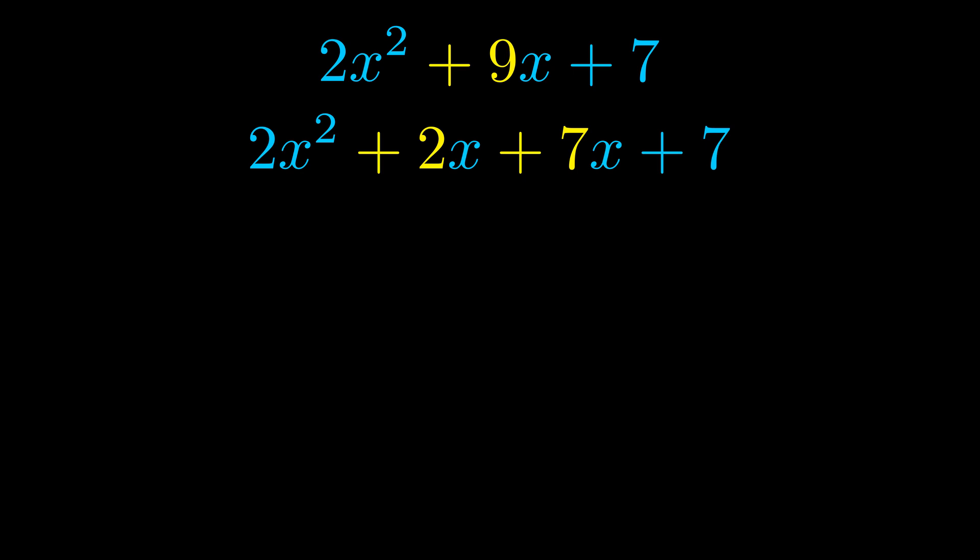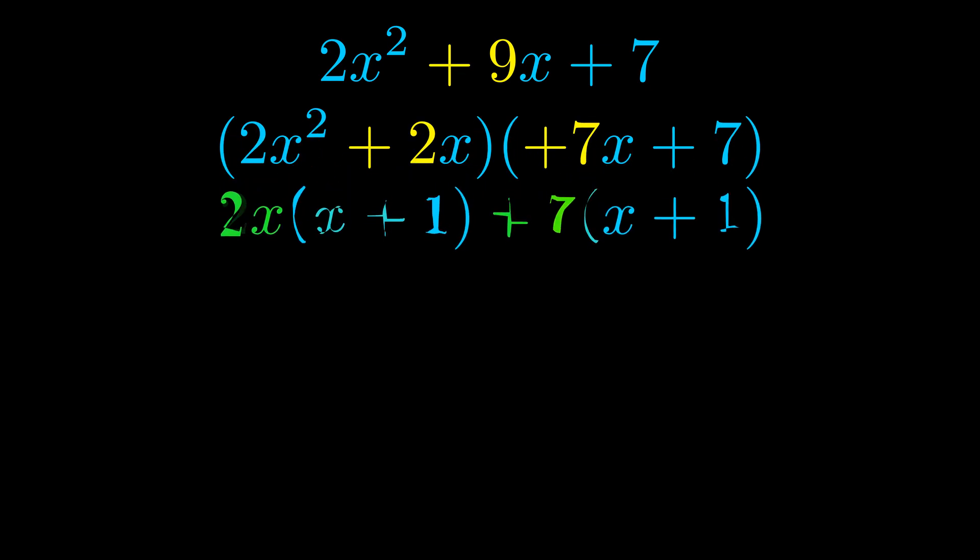Once we've done this we go ahead and put parentheses around the first term and the last term. And we do that so that we can take the greatest common factor out of both terms. We can see the greatest common factor is now outside in green.